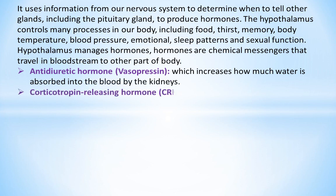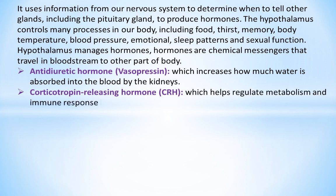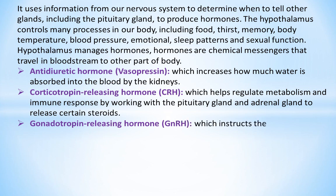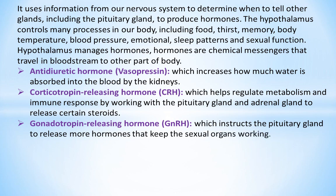Corticotropin-releasing hormone (CRH) helps regulate metabolism and immune response by working with the pituitary gland and adrenal gland to release certain steroids. Gonadotropin-releasing hormone (GnRH) instructs the pituitary gland to release more hormones that keep the sexual organs working.